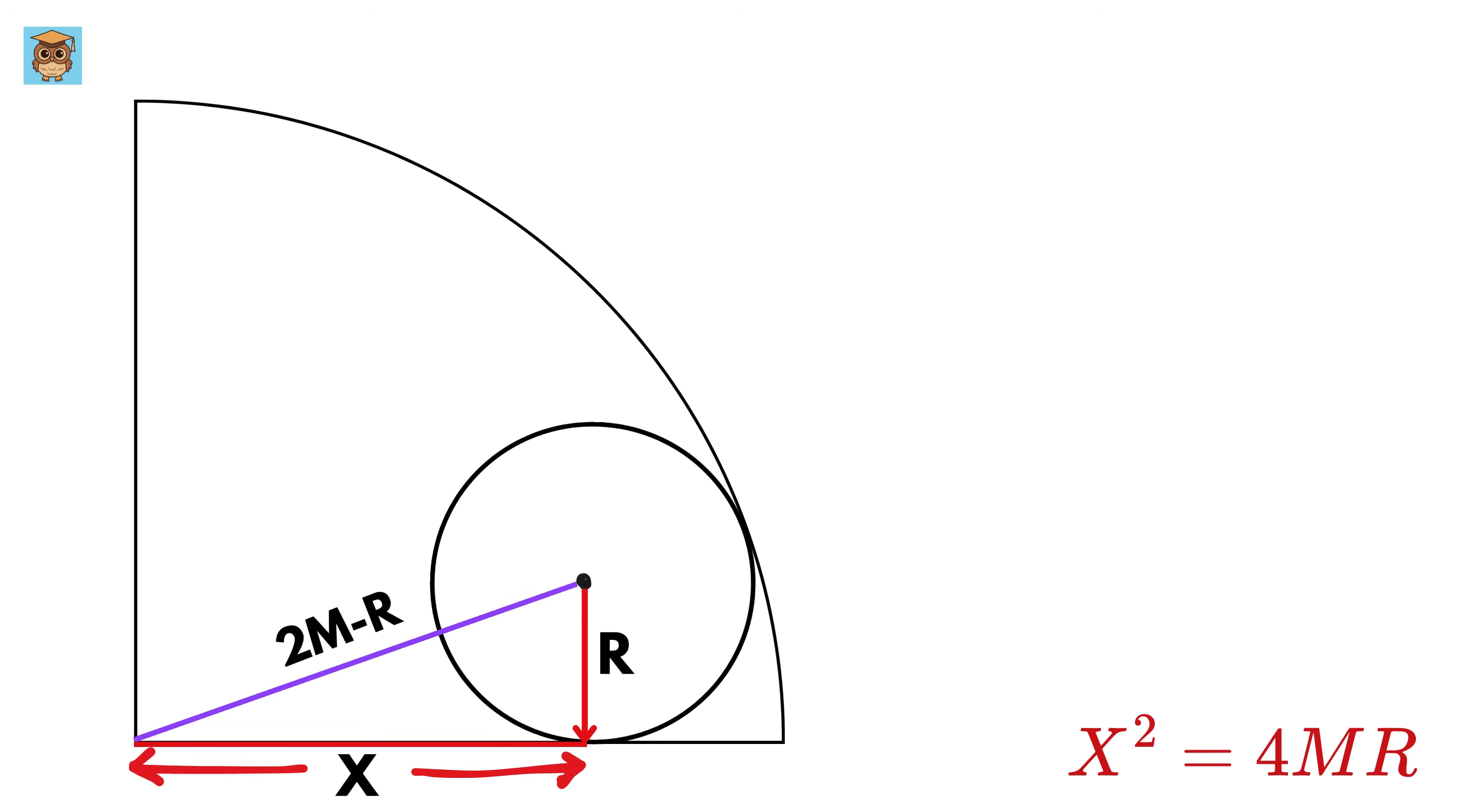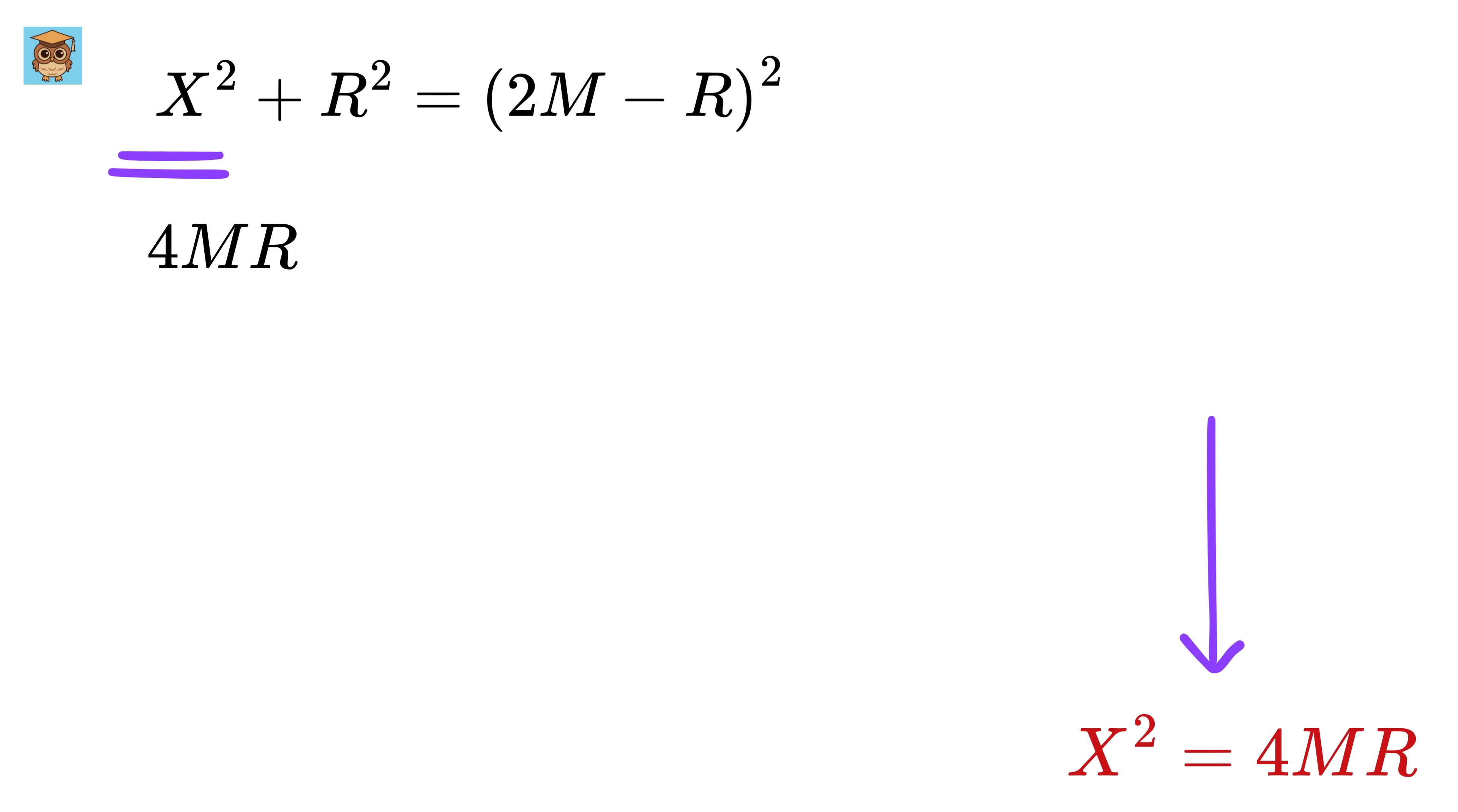So we can use Pythagoras theorem on this right triangle to get x² + r² = (2m - r)². x² = 4mr plus r² equals... expand this to get 4m² + r² - 4mr.